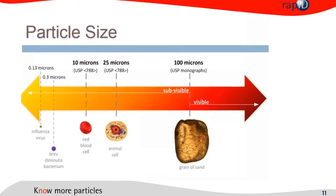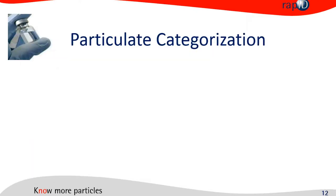Just briefly about particle size — what is visible and what is sub-visible. To make it simpler today: a particle above 100 microns is considered to be visible. There are also new categories now in the updated USP, not only in the 1790 but also in other chapters such as the 1788, which covers different categories of sub-visible particulate matter.